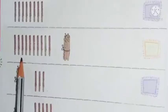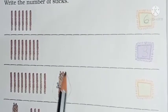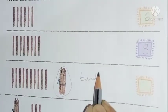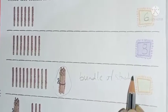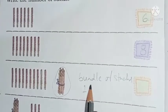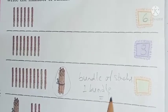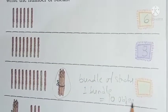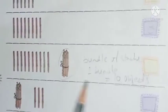Now we have to look at the last part of the chapter. This bundle — what is it? A bundle of sticks. And in a bundle, how many are there? One bundle has 10 objects. So, how many sticks are in one bundle? 10 sticks.